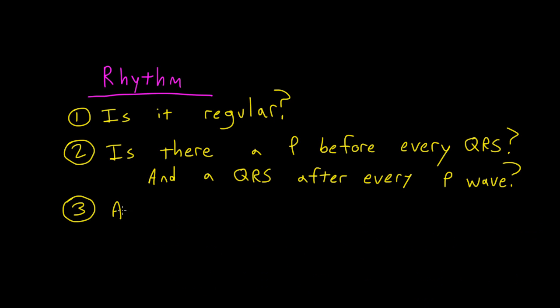Next, I asked myself, are the P waves normal? So for example, with normal sinus rhythm, you get an upright P wave in lead 2.